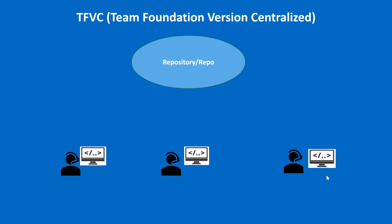Let's say developer number one is working on some requirement. The whole reason we maintain a code repository is to keep track of every change that everybody is making, and to maintain a single repository where we have all the code that every developer has written — the whole code of the project.